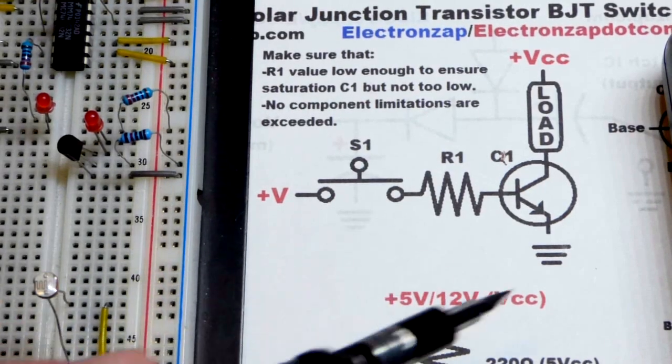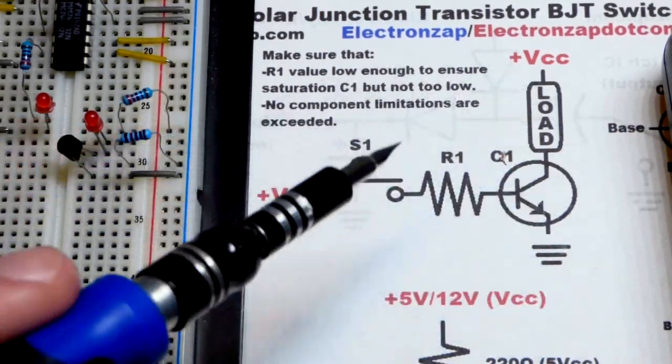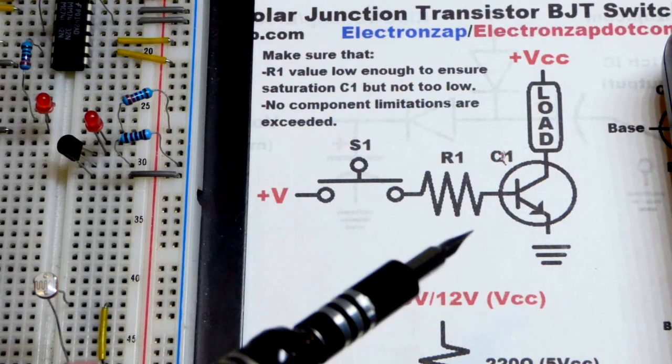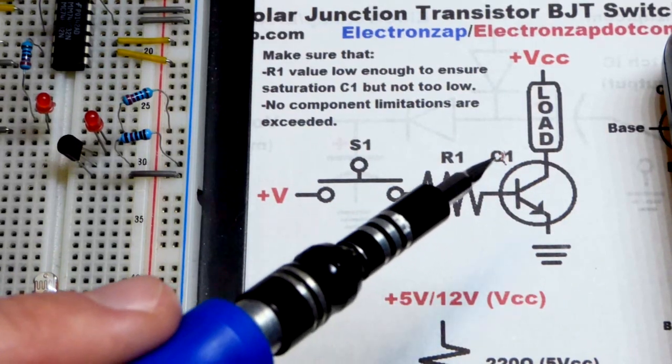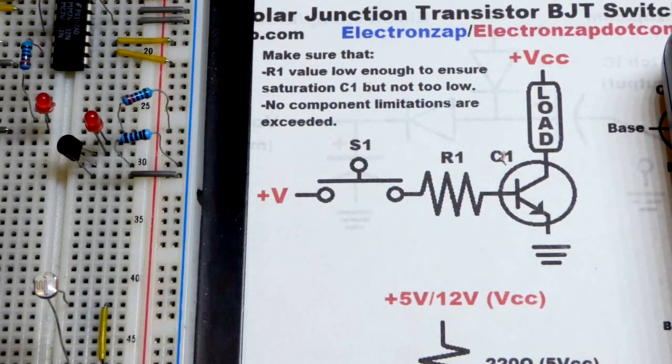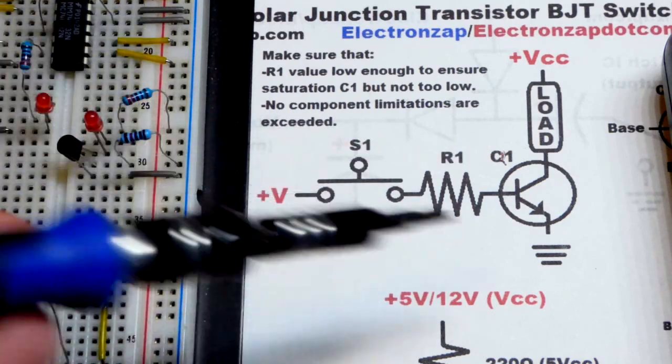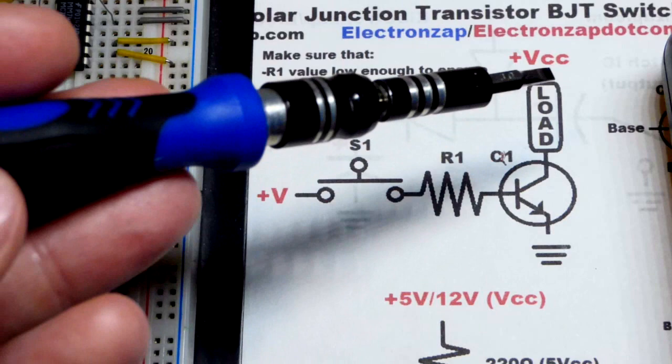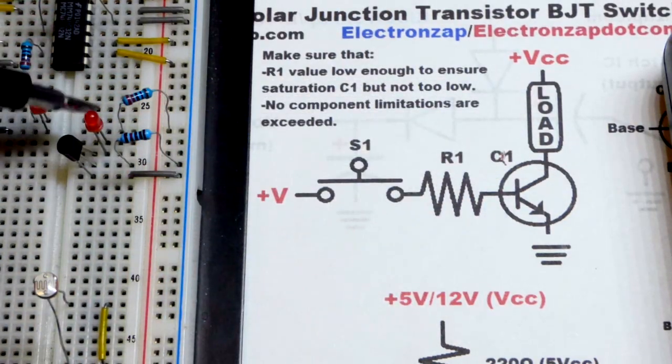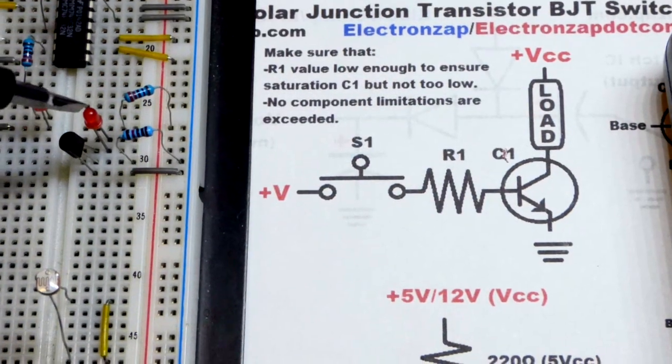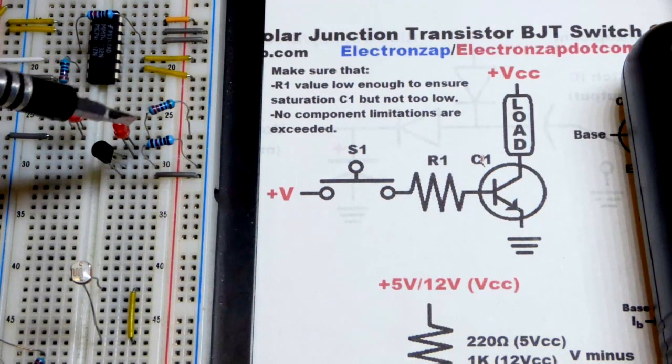So now in this video, I assume you're already familiar with the NPN bipolar junction transistor switch. That's supposed to say Q right there - I accidentally put C and tried to fix it with pen. But in any case, the NPN bipolar junction transistor switch, the load is off. In this case, the load is an LED and a protective resistor.